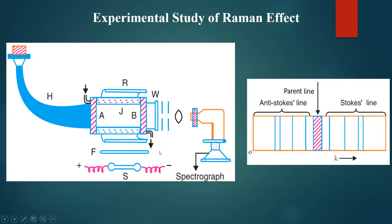This is the experimental arrangement and the observed Raman spectrum. You can refer to the shared notes in Google Classroom for the full explanation of this experimental study of Raman effect, as only the diagram has been included here.